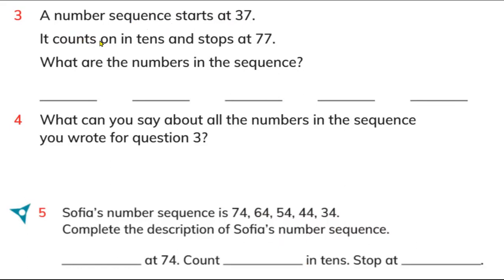It counts on — counting on means you have to count forward, like one, two, three, four. You have to count on in tens, meaning you jump in tens, and it stops at 77. There are five blanks to fill. We have to put numbers in the sequence — in order, by counting in tens. Don't count back; you have to count on.